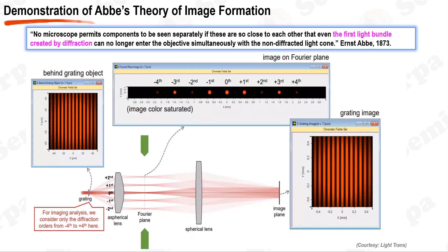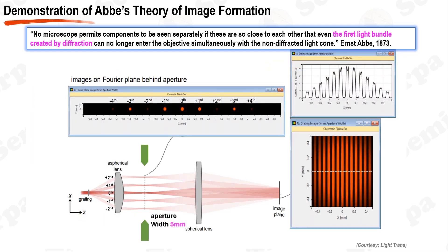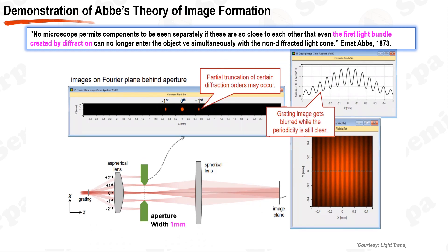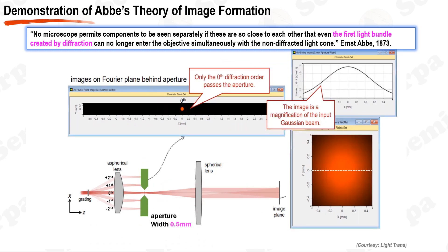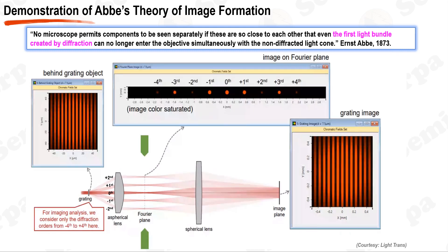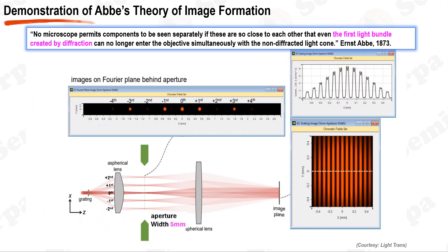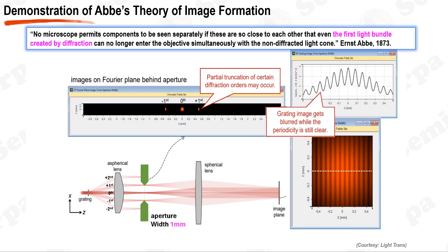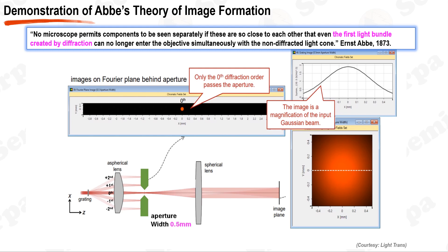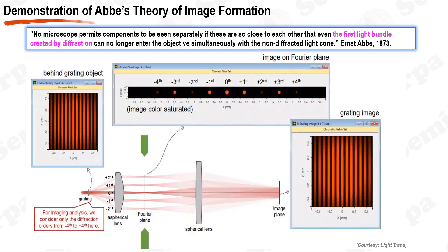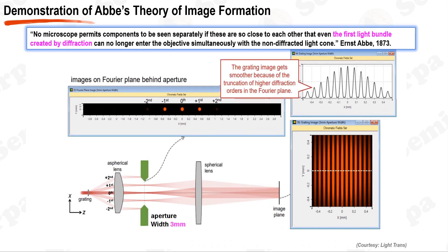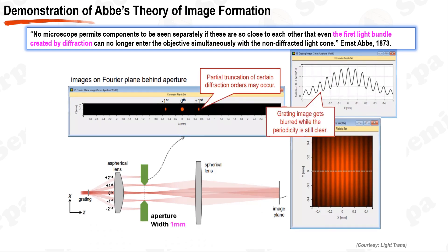In optical lithography, the primary goal is to transfer the pattern from a photomask onto a photoresist using light. Light, with its wave-like nature, doesn't simply travel in a straight line. When it passes through the photomask, it undergoes diffraction, causing it to spread out over a wide range of angles. If the lens collects all diffracted beams, the grating will be fully reconstructed in the image. However, since the lens collects only a finite number of beams, the image is only a partial reconstruction of the original grating pattern. Ernst Abbe articulated a fundamental principle: for closely spaced points to be distinctly imaged, the lens must capture not just the direct light but also the first order of diffracted light.